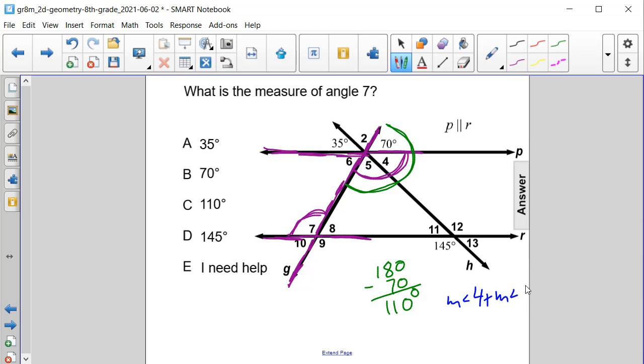The measurement of angle 5 is also equivalent to the measure of angle 7. So the measure of angle 7 is 110 degrees, answer choice C.